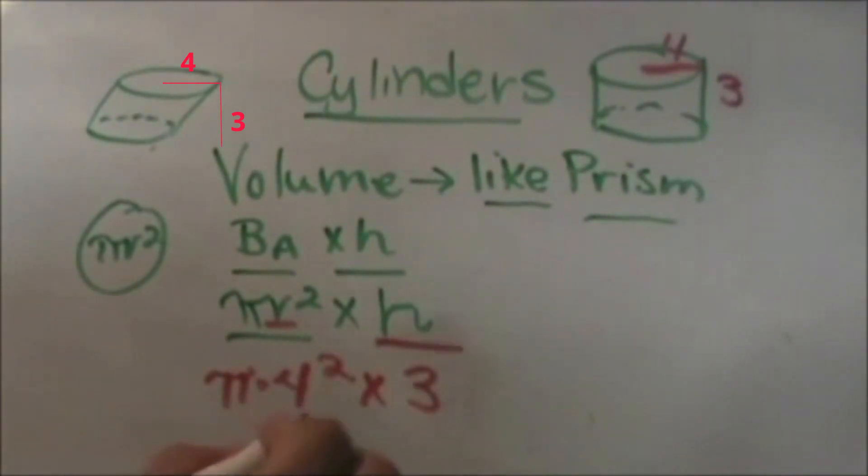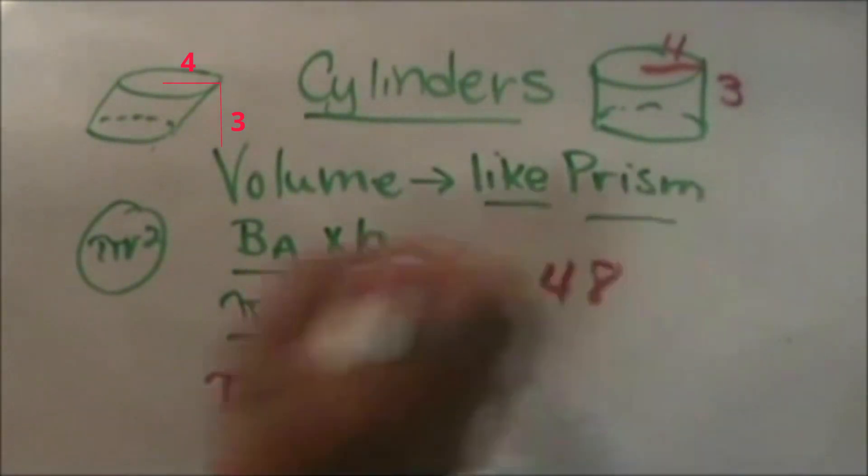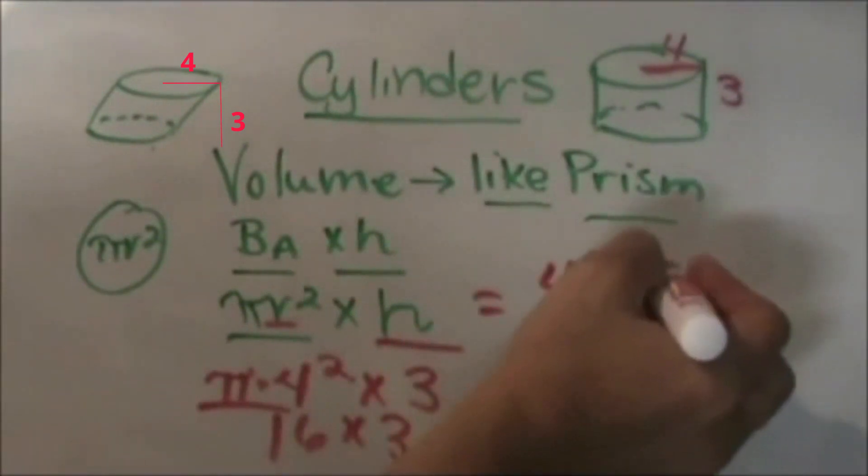Well 4² is 16, times 3 is 48. We're just going to attach the π to the back, so 48π.